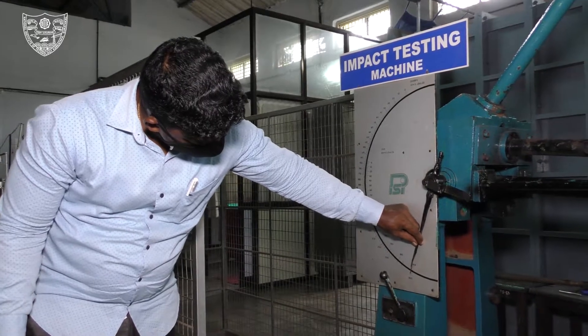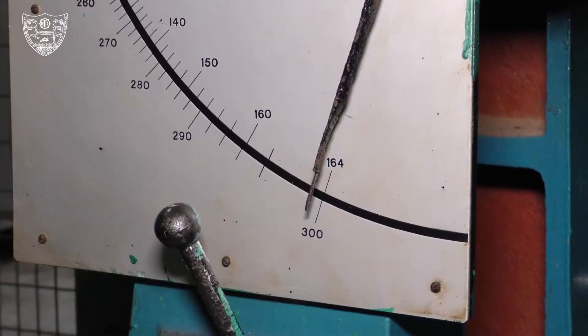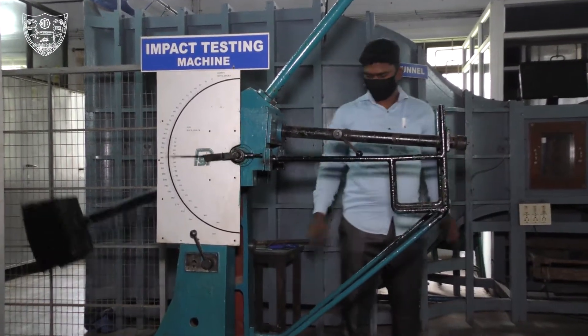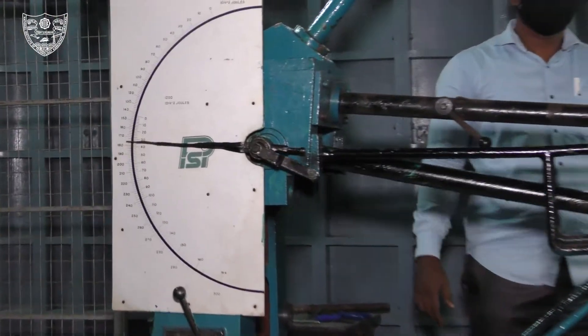Re-adjust the reading to 164 joules and then release the hammer. The hammer strikes against the specimen and breaks it.